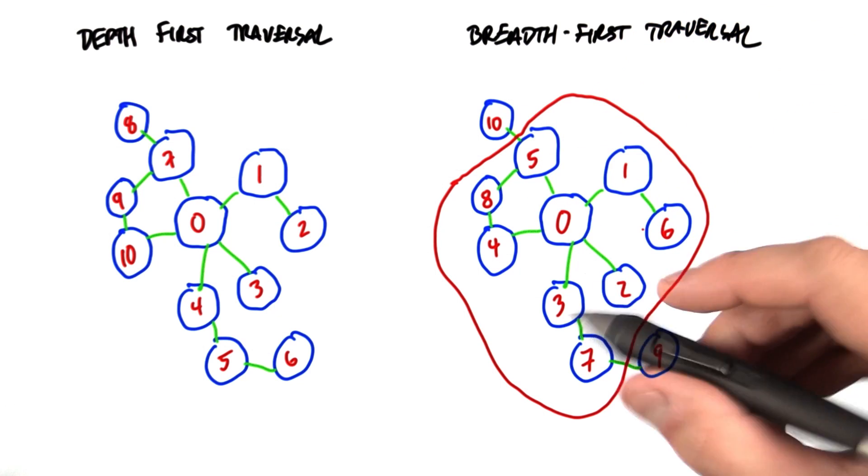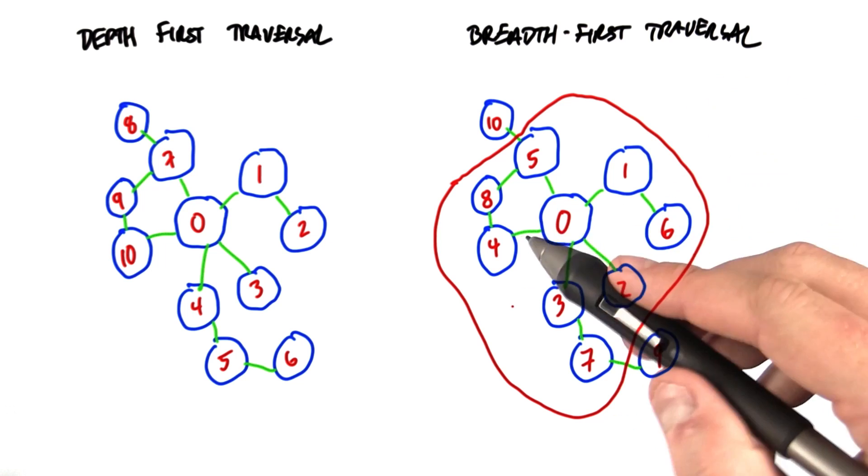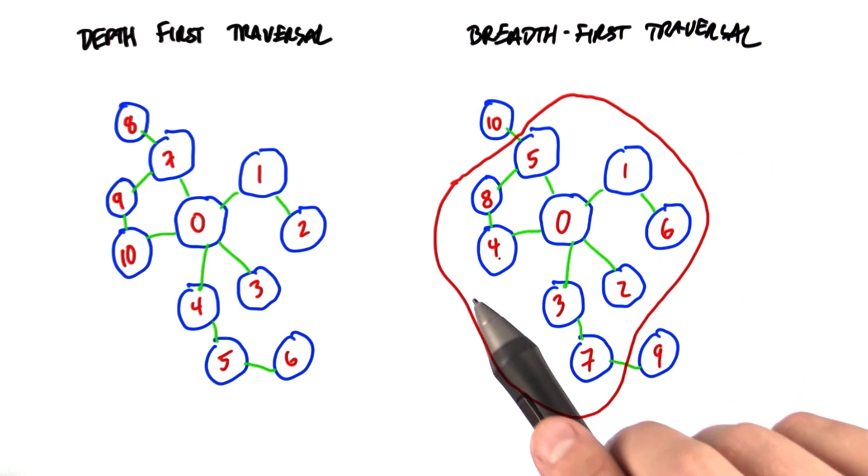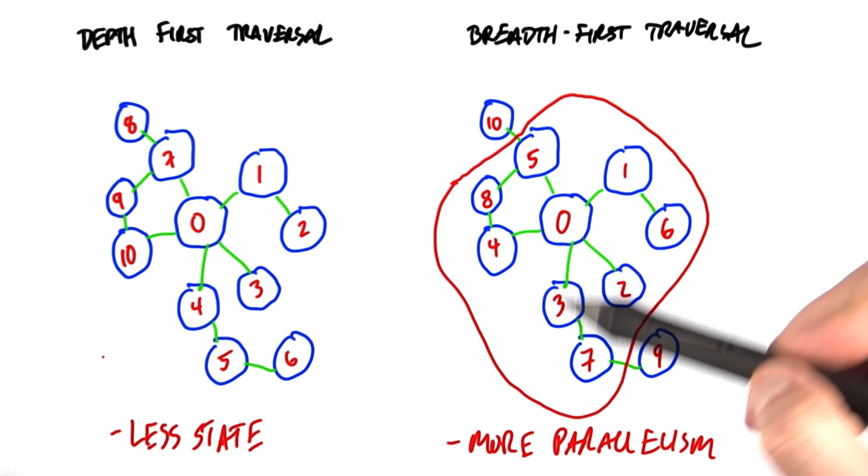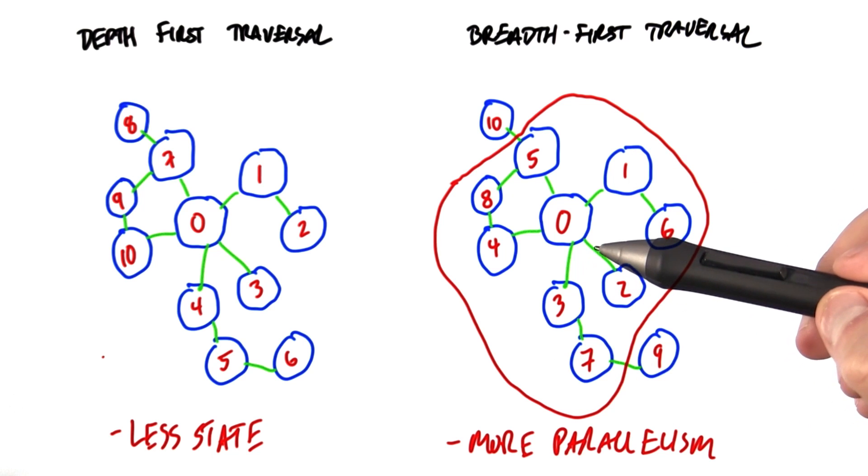Now, which one of these is better? Well, it depends on the problem. Structure of the graph, what you're looking for, if you're able to make good decisions about which way to go next. Generally, people will say that DFS requires less state, less temporary storage to run. But BFS, on the other hand, exposes more parallelism during the traversal.